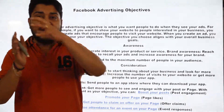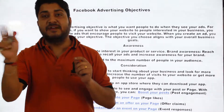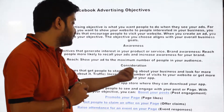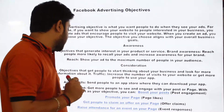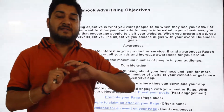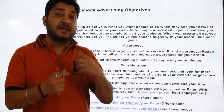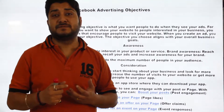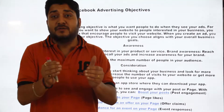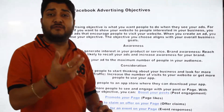Traffic increases the number of visits to your website, or gets more people to use your app — if you want to divert Facebook users to your website, you can use this consideration objective. App Installation is another objective: if you want to promote your app, you select this, and Facebook will display your ad to specific users who are likely to install it. Facebook's targeting is so precise that it can target Android or Apple users accordingly.